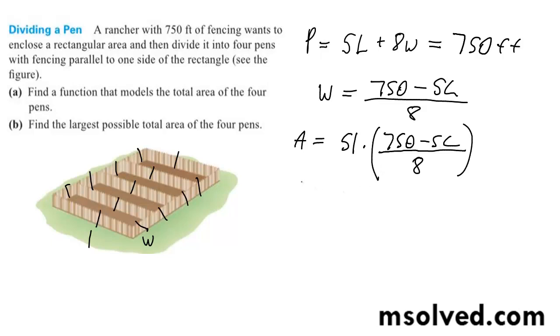So what we end up with is area equals 375L minus 5 over 2 L squared.